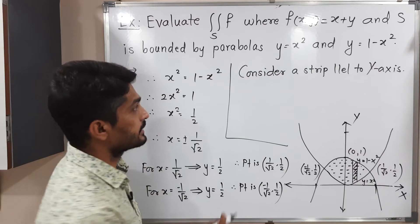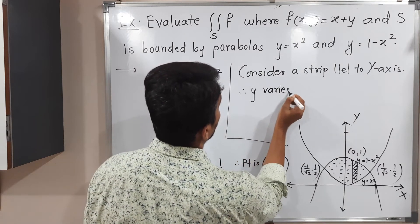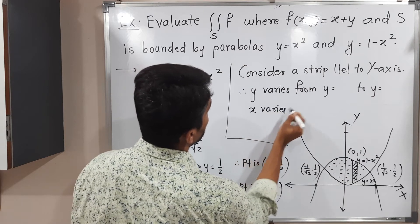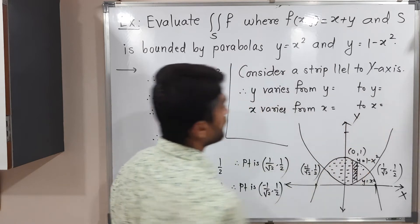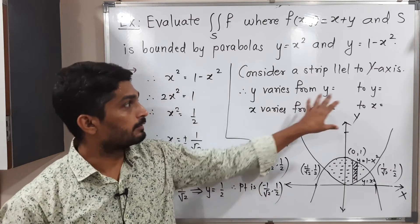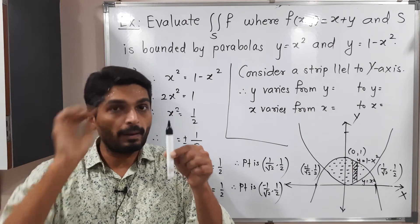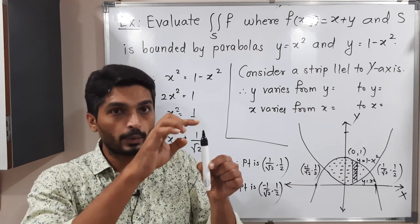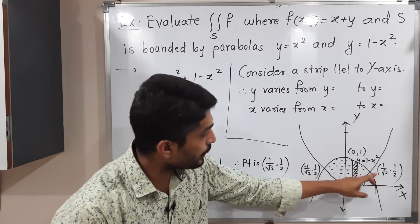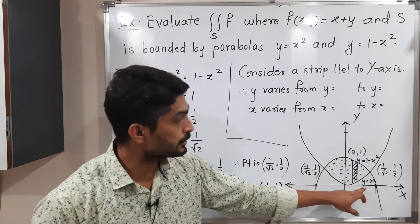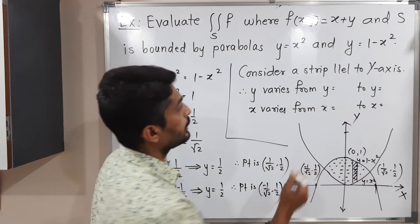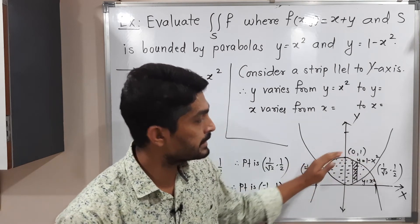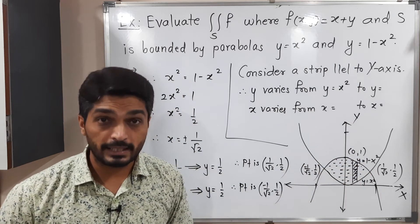When we consider a strip parallel to the y-axis, we write: y varies from y = (lower) to y = (upper), and x varies from x = (left) to x = (right). Our funda is: bounded below, bounded above, left to right. The strip is bounded below by the parabola y = x², so y starts at x².